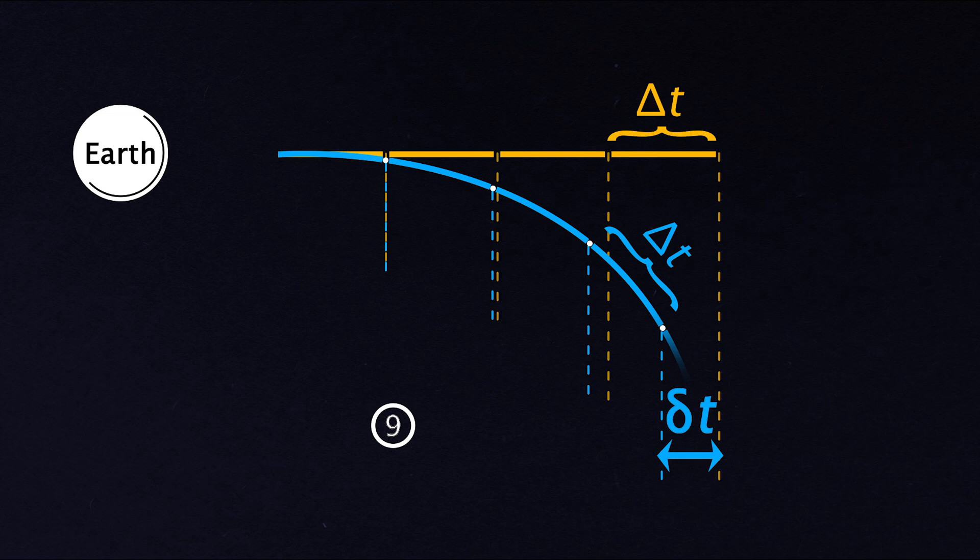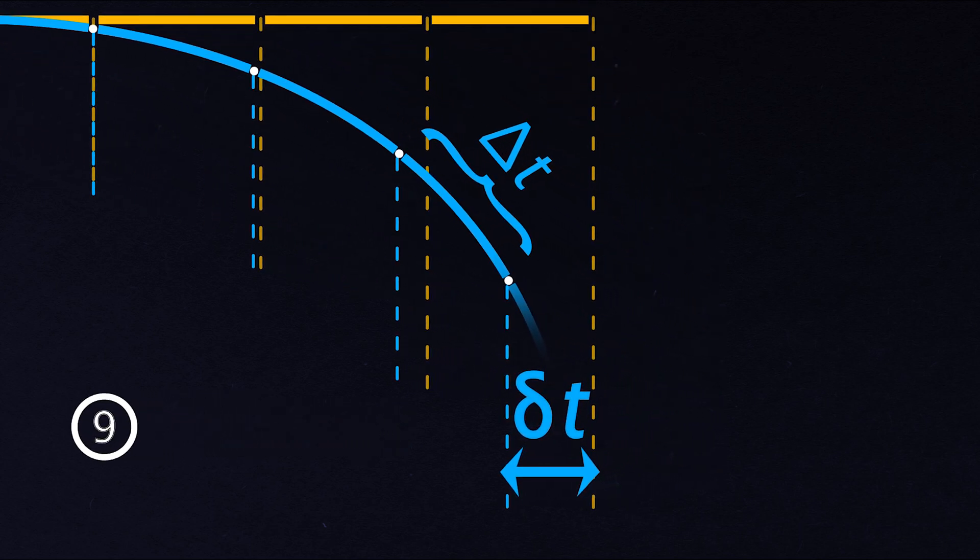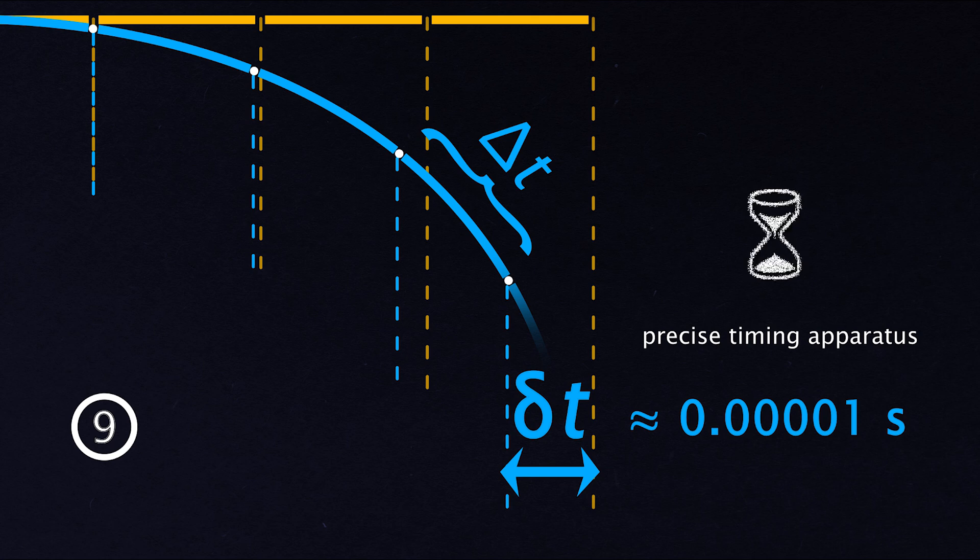Witten points out that there are a number of things that complicate this story. What you see here is a highly exaggerated view of the real shifts. In reality, the anticipated change in time that each signal takes to travel from a spacecraft to Earth is tiny, only a hundred thousandth of a second. This means that very precise timing apparatus would have to be placed on board of the tiny spacecrafts, which of course would be a major technological challenge.